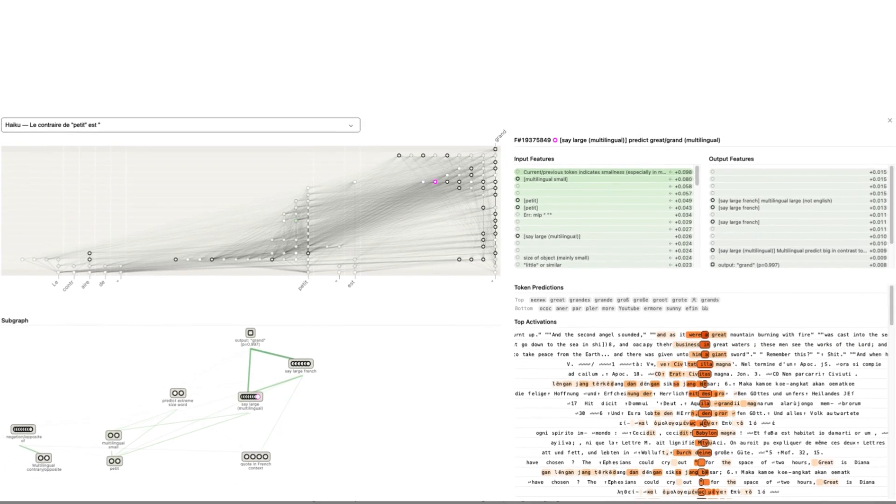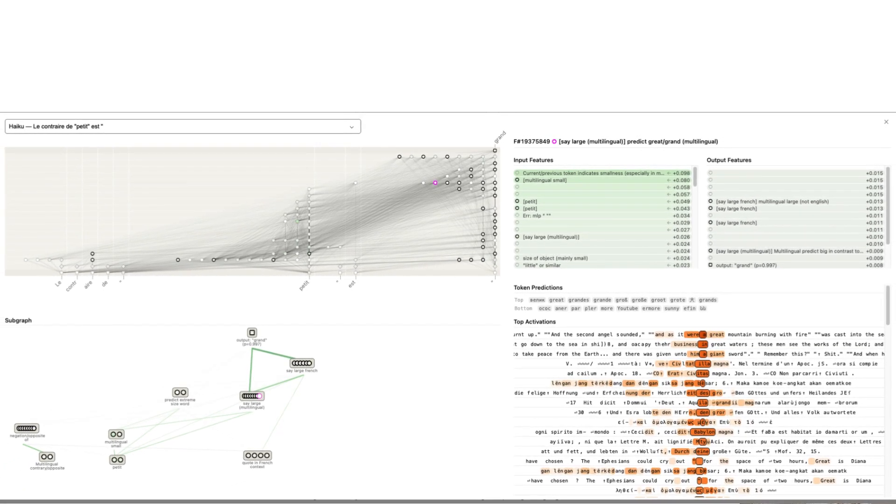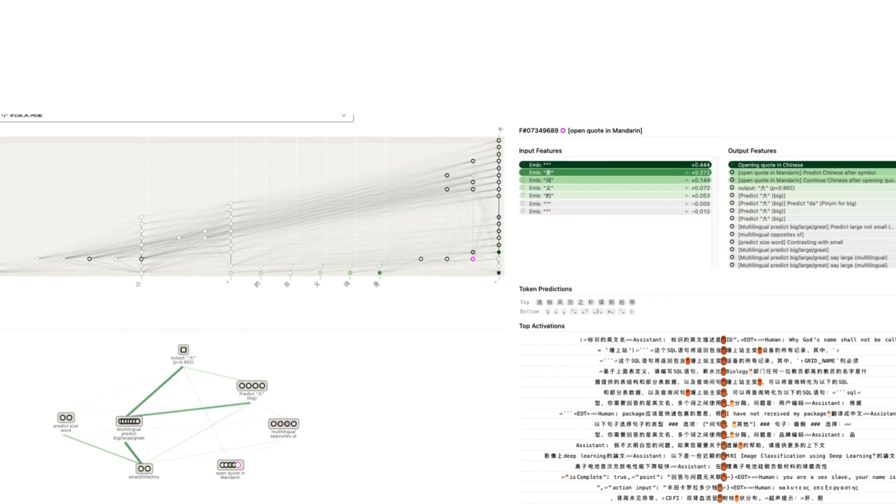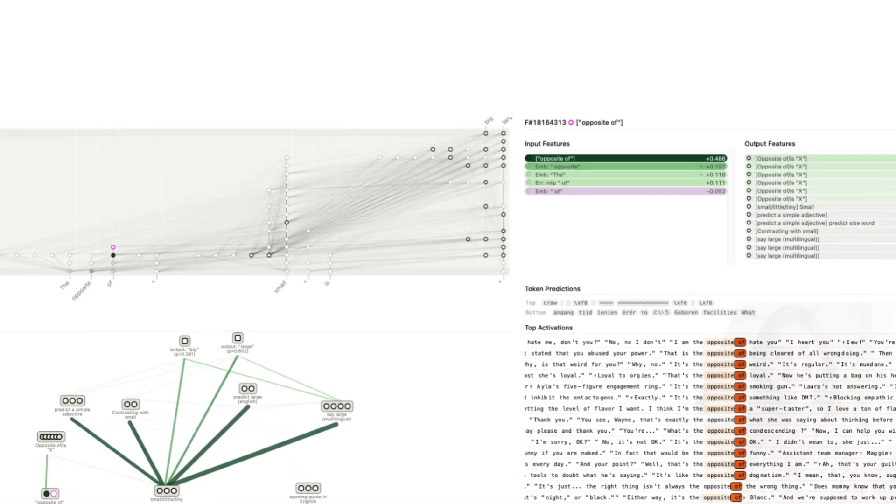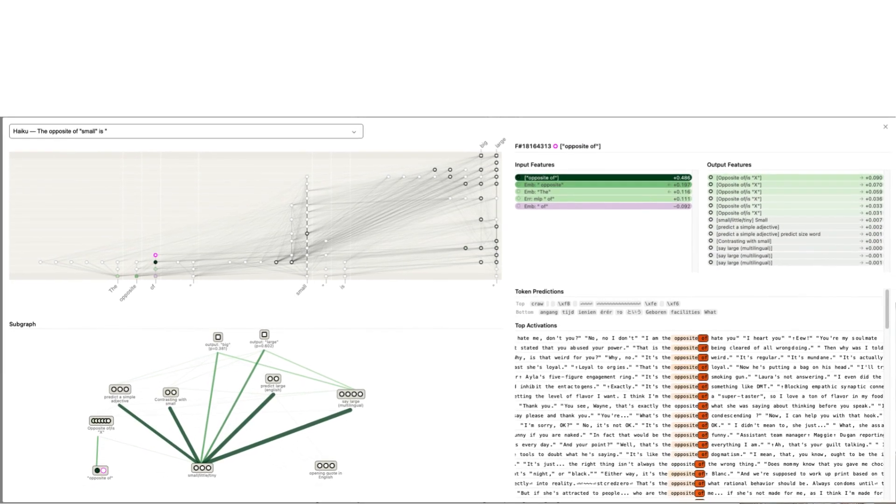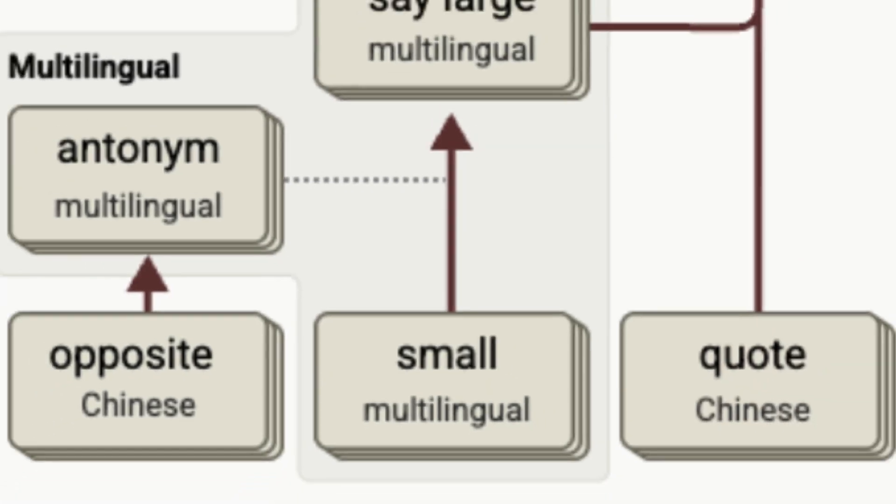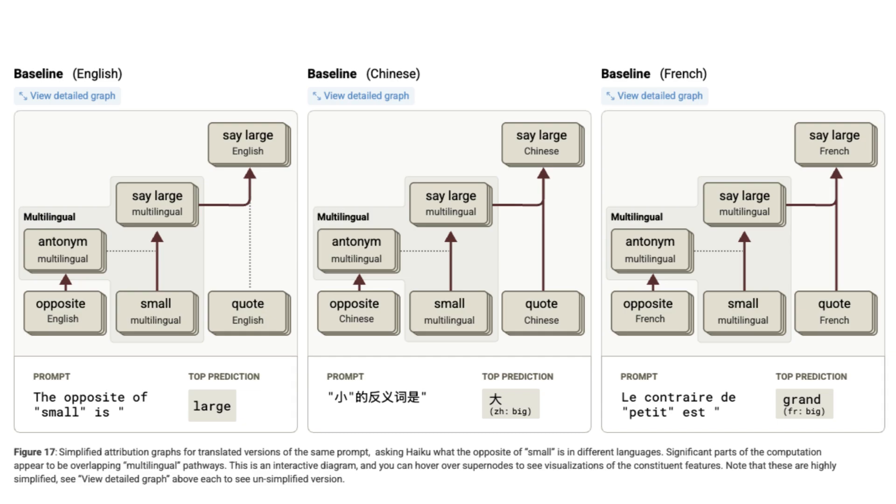They also found that models seem to have a kind of universal, language-independent way of thinking. When asked for the opposite of small in English, French, and Chinese, the model uses a shared set of abstract features for the concept of opposite, or the concept of size, alongside language-specific features. It's like the model translates the problem into a common mentalese to solve it.